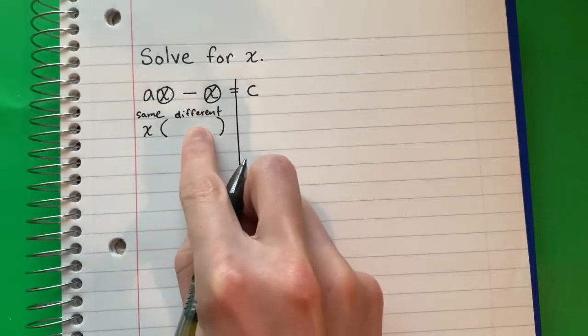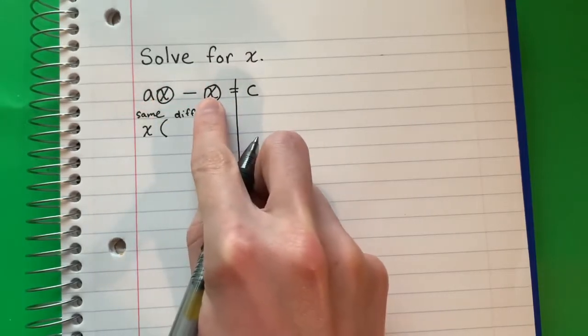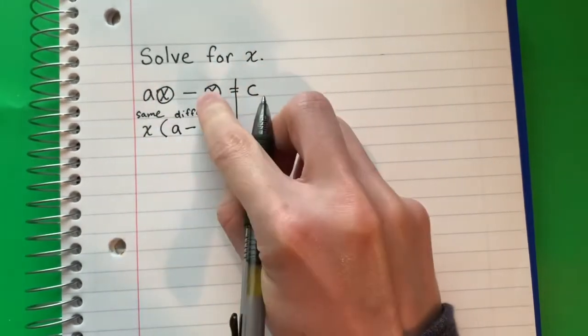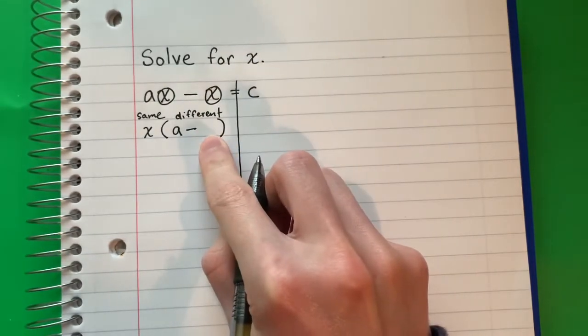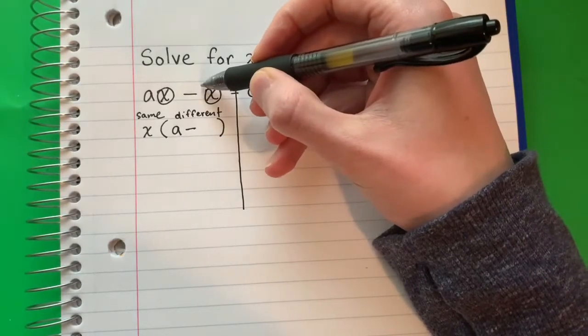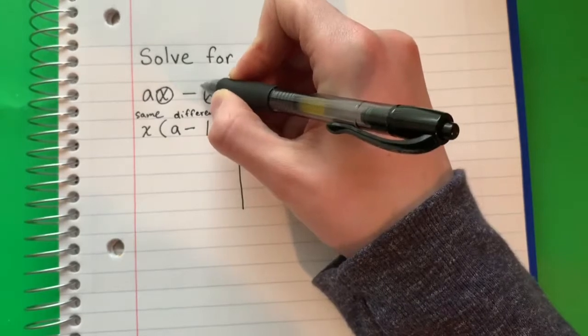Now what is different goes inside. What is different? Well, here there's A, here no A. So I'm going to put A, copy the minus. Here there's nothing, so I cannot leave an empty space. Remember, if there's no number in front, it's actually a 1.